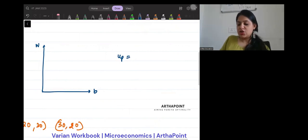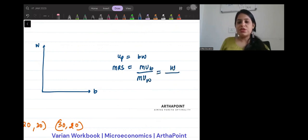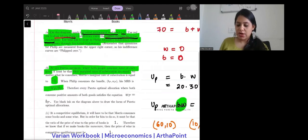so UP, utility function of P will be BW. So MRS is marginal utility B by marginal utility W. If I differentiate it with respect to B, I get W, and with respect to W, I will get B. So it will be minus W by B. Okay, so that's also right.